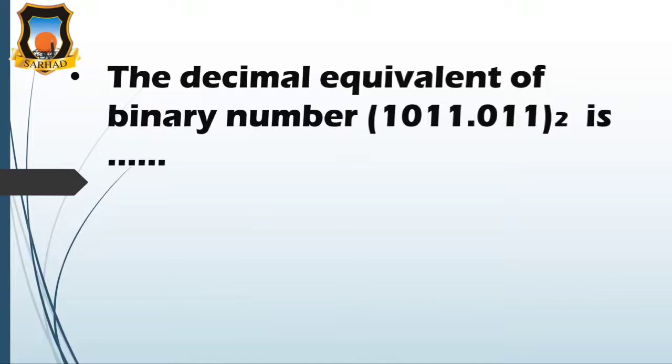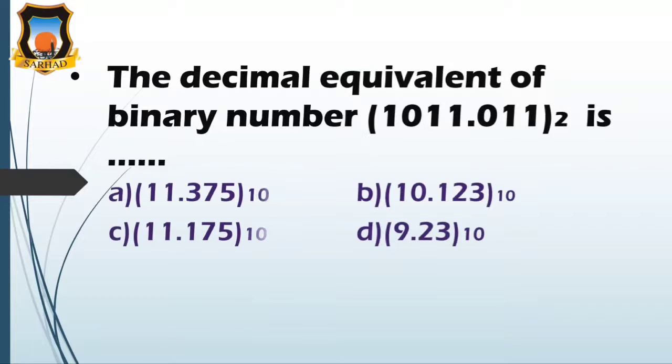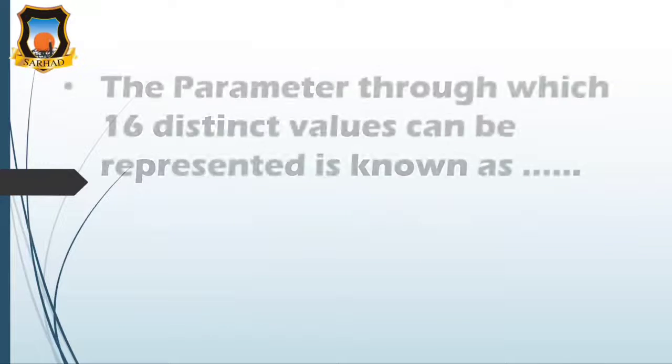Next question: the decimal equivalent of binary number 1011.011 is - option A 11.375, option B 10.123, option C 11.175, and option D 9.23. So the answer is A, 11.375. As we all know, binary to decimal conversion is obtained by multiplying to the power of 2 and the base index.